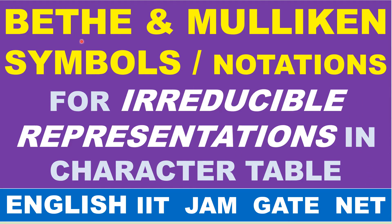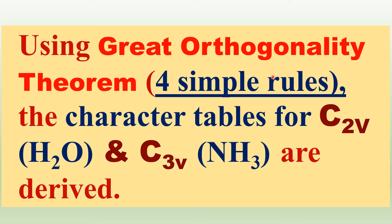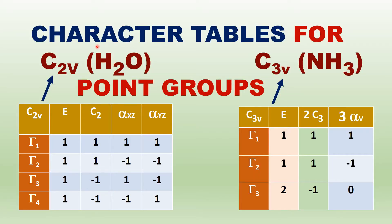There are two notations or symbols to indicate the irreducible representations. For example, Gamma 1, Gamma 2, Gamma 3, Gamma 4 — we have studied these in the previous lectures. Please watch how to construct the character tables by using the great orthogonality theorem. Using the four simple rules, the character tables for C2V, C3V, or any point groups are derived. In the previous class, we derived the character tables for C2V and C3V point groups.